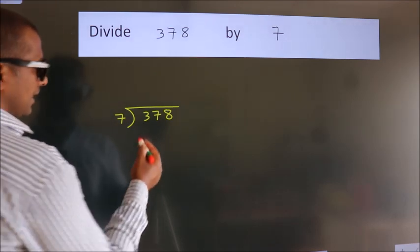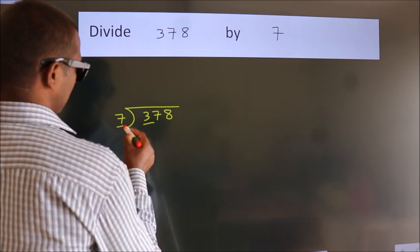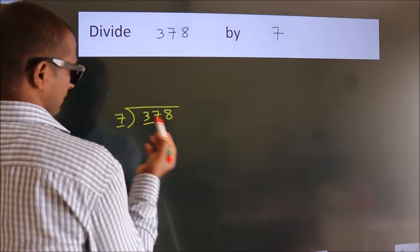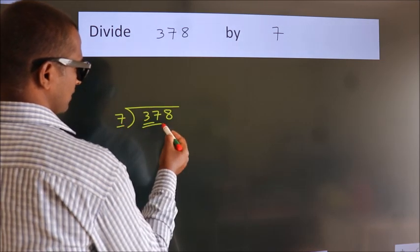Next. Here we have 3, here 7. 3 is smaller than 7, so we should take 2 numbers: 37.